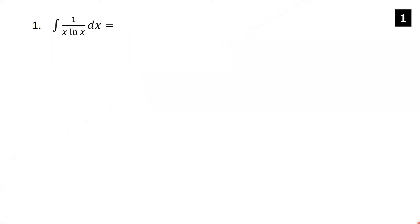The integral of 1 over x ln x dx. We need a little substitution here. Let's try to do it in our heads first, and then I'll write out the details afterwards. If we let u equal ln x, then du is 1 over x dx. So we get the ln of absolute ln x plus c.